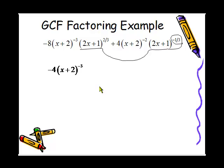We look at the next pair of terms, the 2x plus 1. The one with the negative one-third exponent has the smallest exponent. We'll factor that out. Now that we've found the GCF,